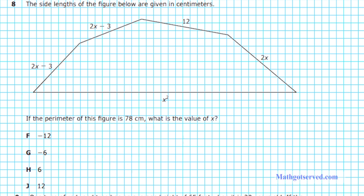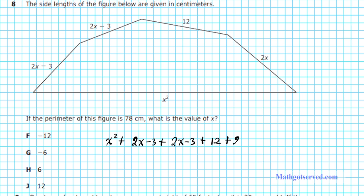Let's take a look at question 8. It says the side lengths of the figure below are given in centimeters. If the perimeter of the figure is 78 centimeters, what is the value of x? The perimeter is simply the sum of all the sides. We have five sides: x squared, plus 2x minus 3, plus 2x minus 3, plus 12, plus 2x. And we set it equal to 78.